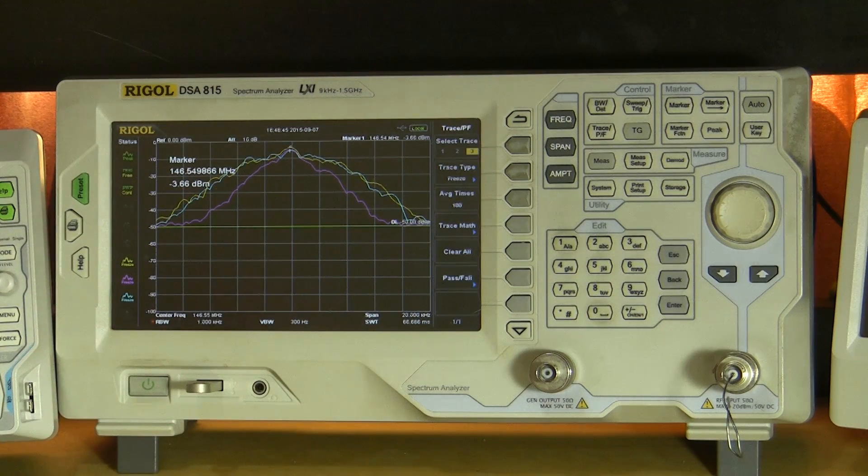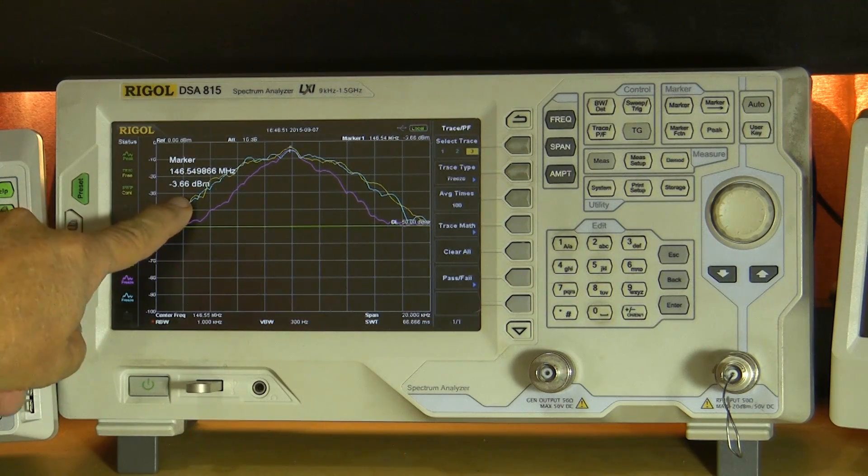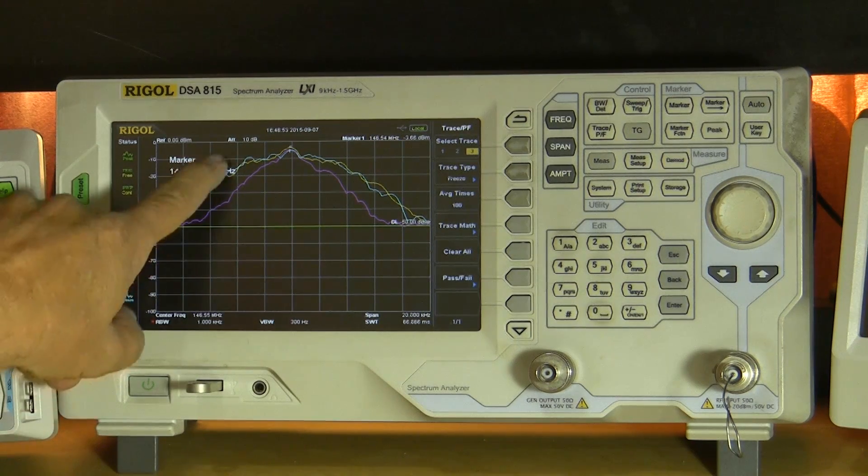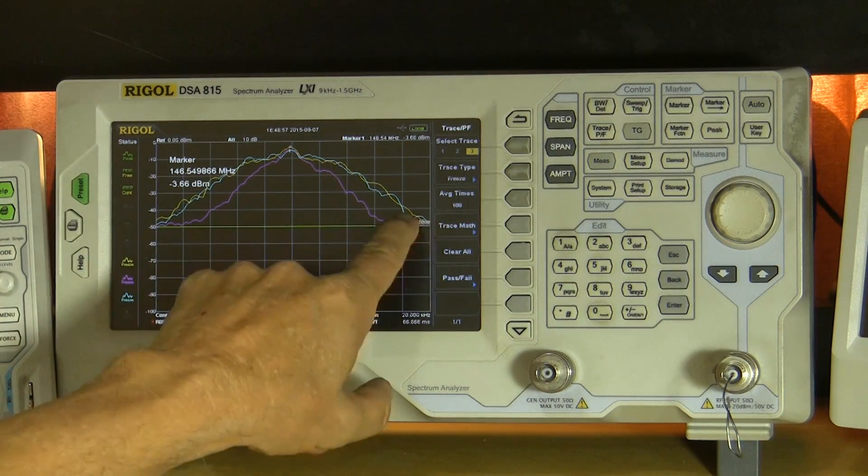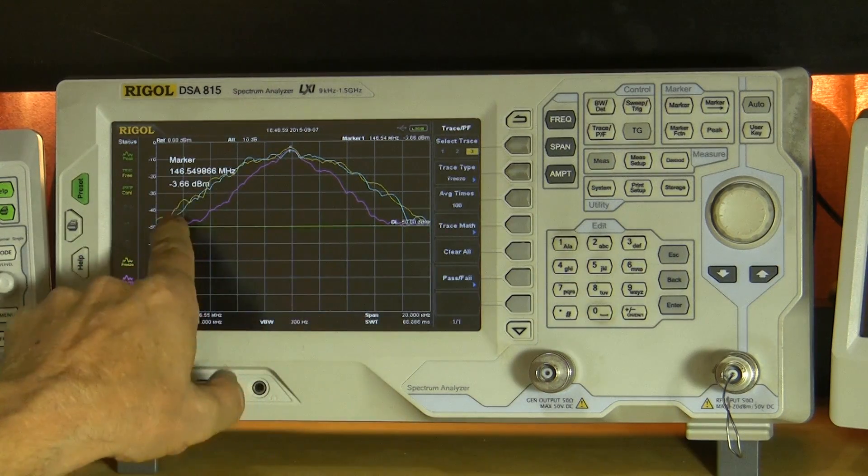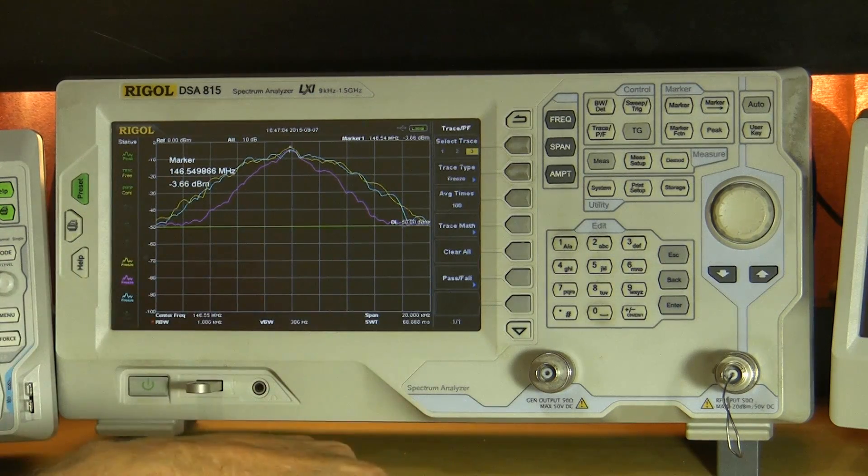So there you go. That's the wideband, wide narrowband FM, the C4FM which is very similar to it. A little bit better bandwidth here but not much. And the narrowband, narrowband FM if you wish.